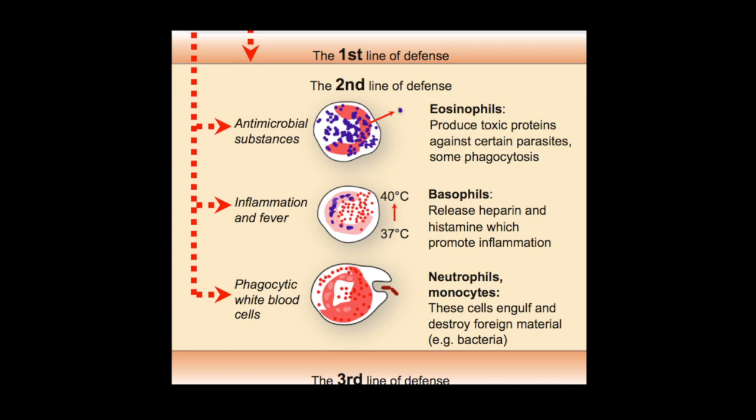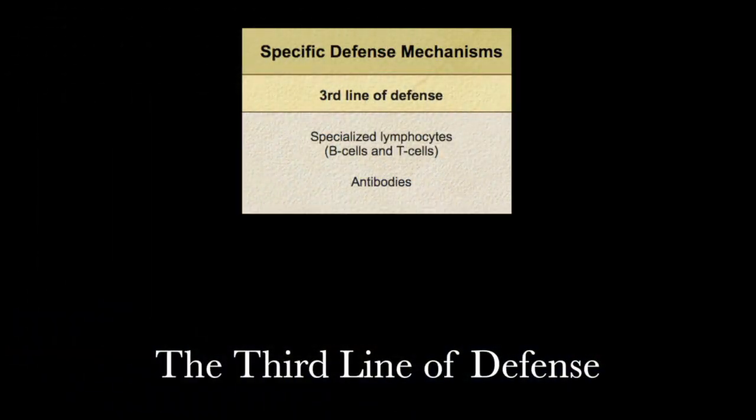If innate immunity fails to mollify the pathogen, the third line of defense is called up. The third line of defense consists of specific defense mechanisms — specialized lymphocytes and B and T cells — that directly or indirectly fight specific antigens. With the third line of defense, we need to talk about adaptive immunity: the body's ability to recognize and defend itself against distinct invaders and their products.